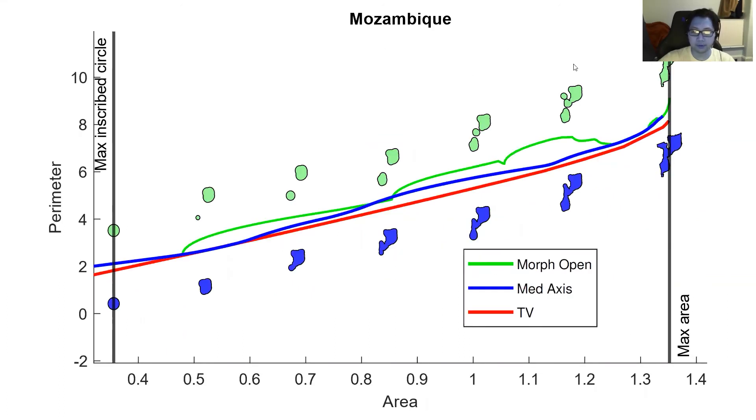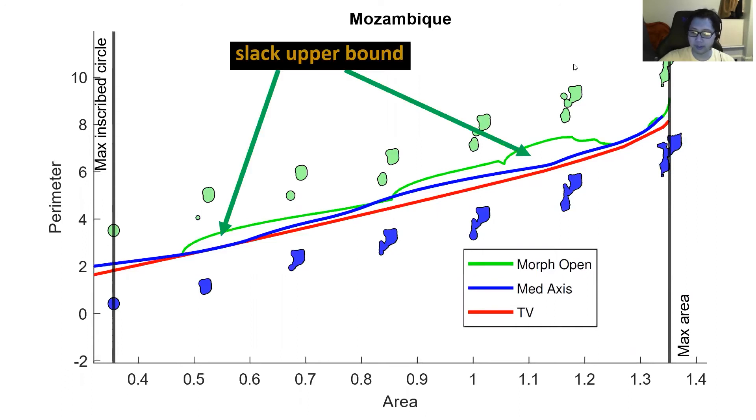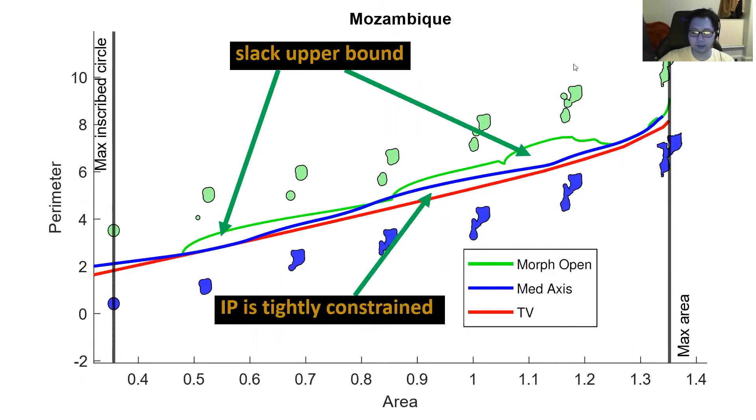In this example, we computed bounds on the isoperimetric profile of Mozambique. Due to Mozambique's odd shape, it has several necks. This results in the morphological opening producing generally worse upper bounds than our method. Combined with the lower convex envelope bound, we have a reasonably narrow region inside which the isoperimetric profile must lie.